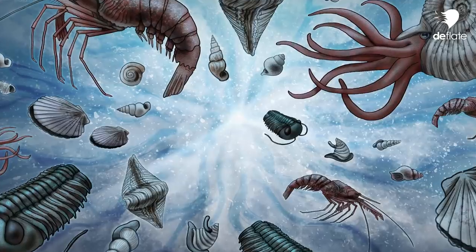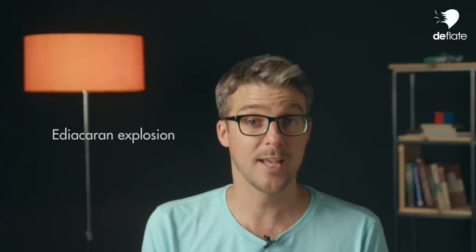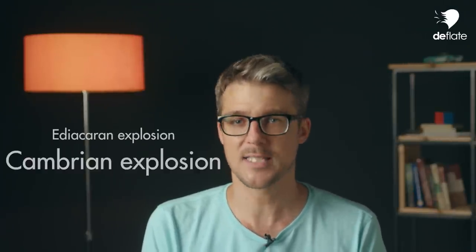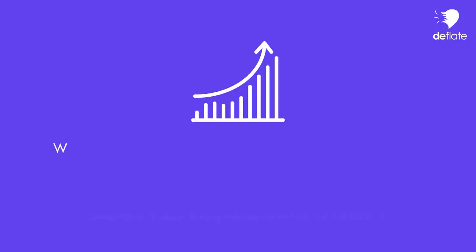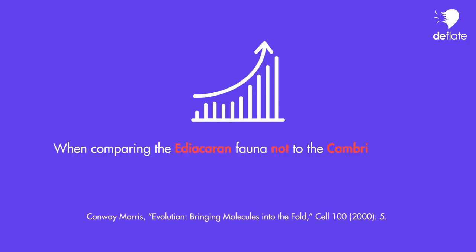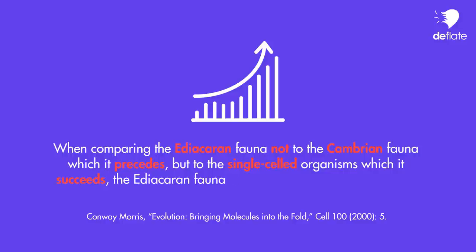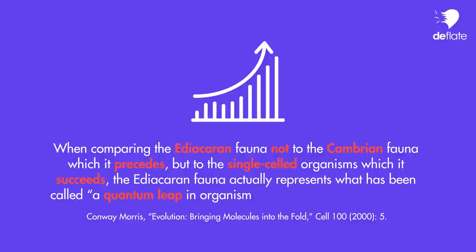This is why the appearance of the Ediacaran fauna is actually referred to by paleontologists as another instance of biological life exploding into all sorts of different forms, just as it does in the Cambrian era. Sure, the Ediacaran explosion is far smaller than the Cambrian one, as the variety and complexity of the Ediacaran organisms doesn't come close to those of the Cambrian animals. However, when comparing the Ediacaran fauna not to the Cambrian fauna which it precedes, but to the single-celled organisms which it succeeds, the Ediacaran fauna actually represents what has been called a quantum leap in organismal and ecological complexity. Another way to put it is that biology's big bang — as the Cambrian explosion is sometimes called — is preceded by a biological POW.